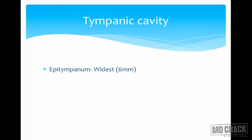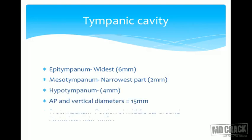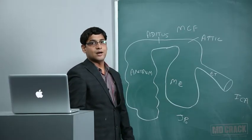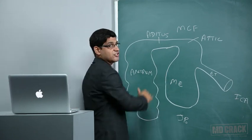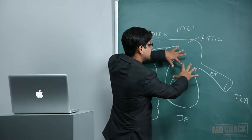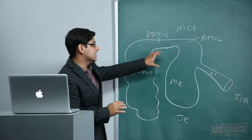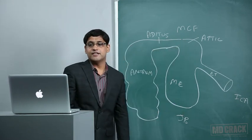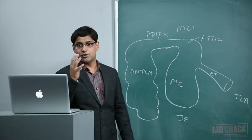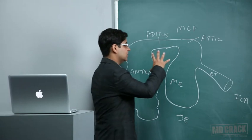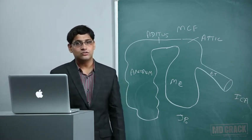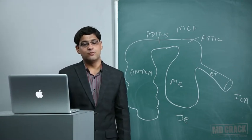The tympanic cavity is divided into several parts. The epitympanum is the part above the pars tensa - it is the widest part, around 6 mm in breadth. The mesotympanum is opposite to the pars tensa and is the narrowest part, around 2 mm. The hypotympanum is the part below the pars tensa, around 4 mm. The protympanum surrounds the eustachian tube area. The antero-posterior and vertical diameters of the tympanic cavity are approximately 15 mm.